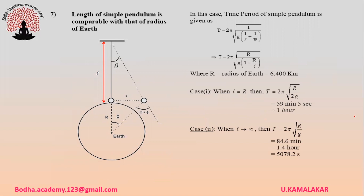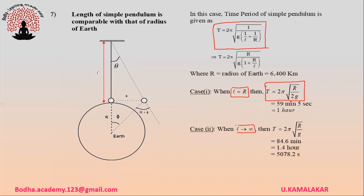When the length of a simple pendulum is comparable with the radius of the Earth, the time period is T = 2π√(1/g × 1/(1/l + 1/R)), where R is the radius of Earth (6400 km). If l = R, then T = 2π√(R/(2g)). If l tends to infinity, T = 2π√(R/g), which equals approximately 84.6 minutes.